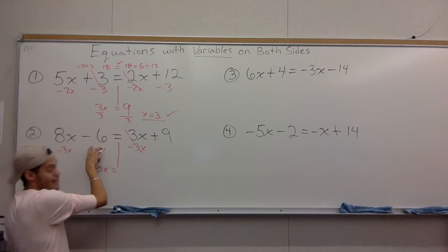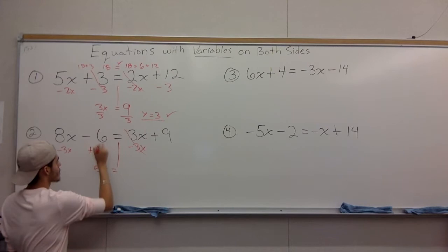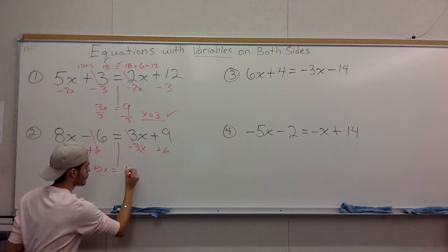We have this minus 6 right here, do the opposite. Opposite of subtraction is addition. Add 6 to one side, add 6 to the other, we have 9 plus 6, 15.